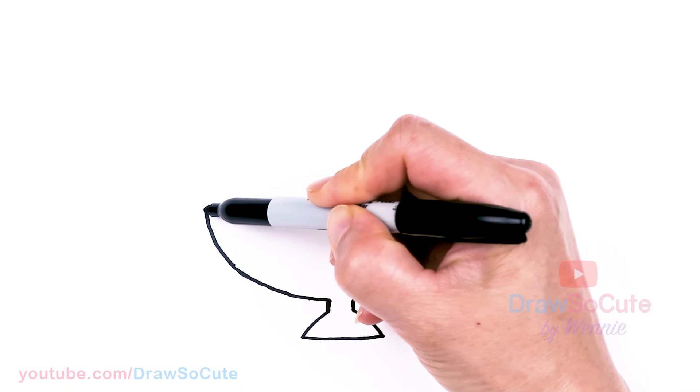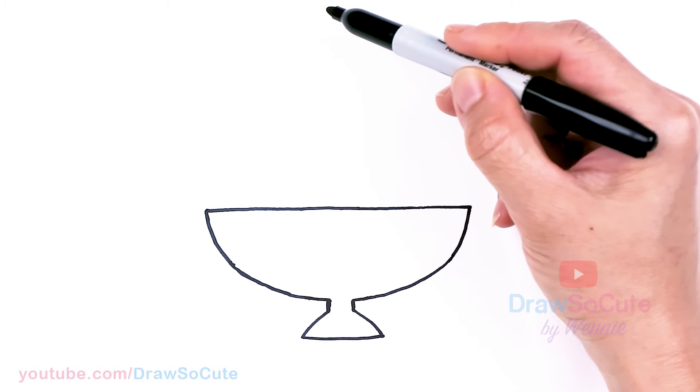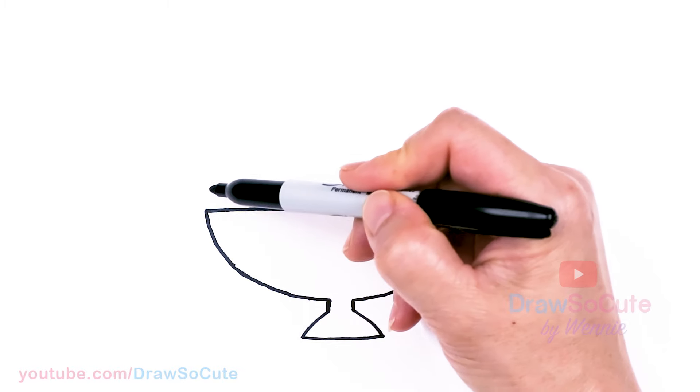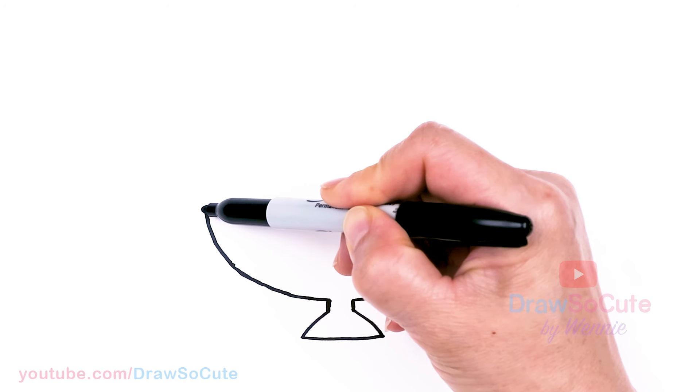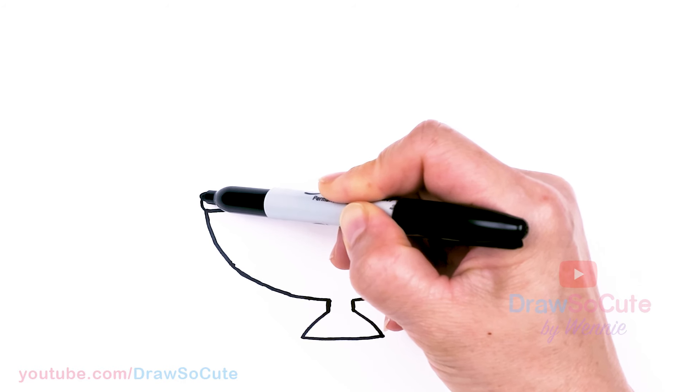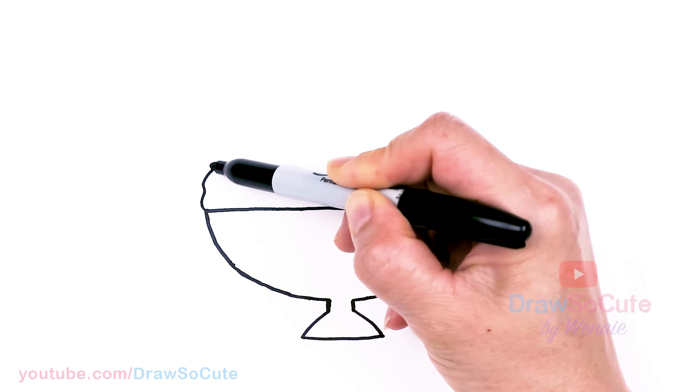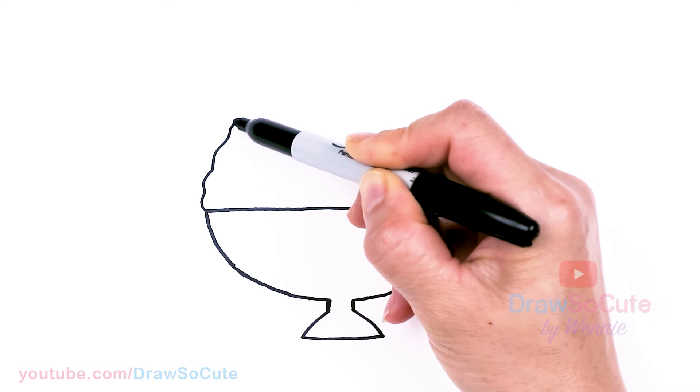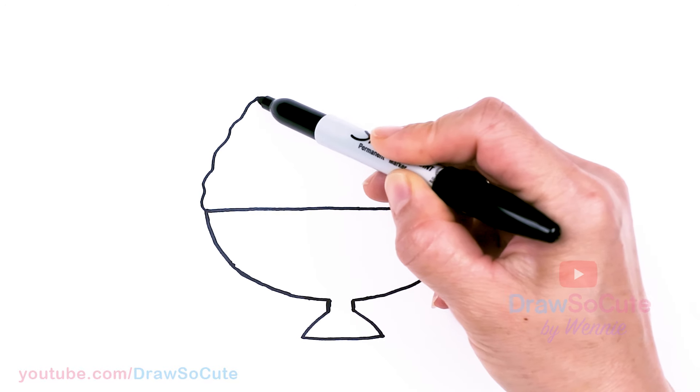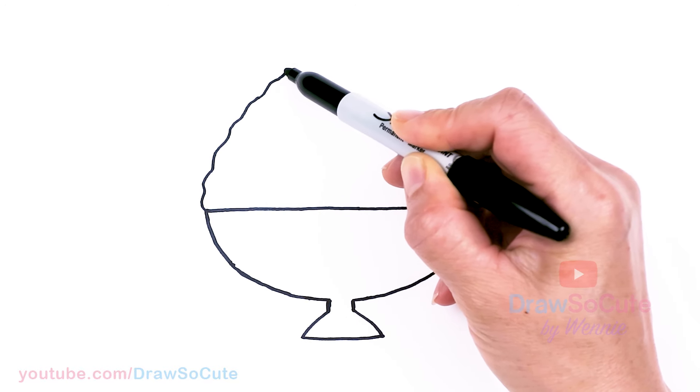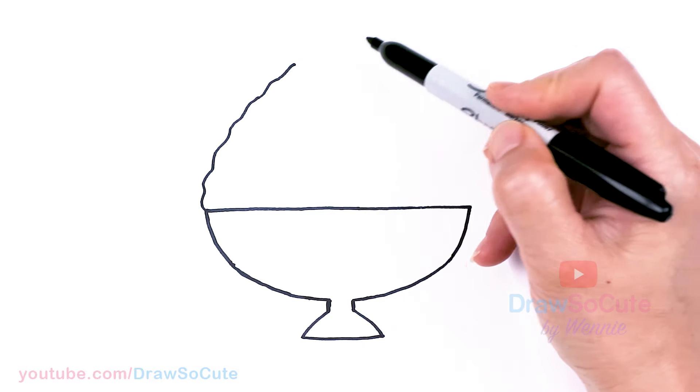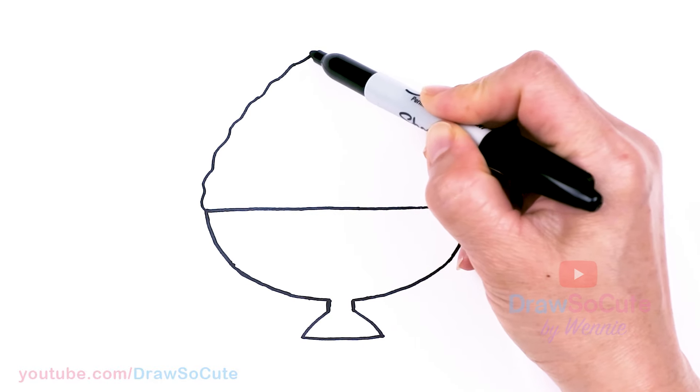Now that we have this fancy bowl, we can fill it with shaved ice. I'm just going to come about right here, right on the edge. We're going to make this really full. I'm just going to go up and then come back down. It's all up to you how tall you want your shaved ice to be. But your goal is to just kind of draw this wobbly line.